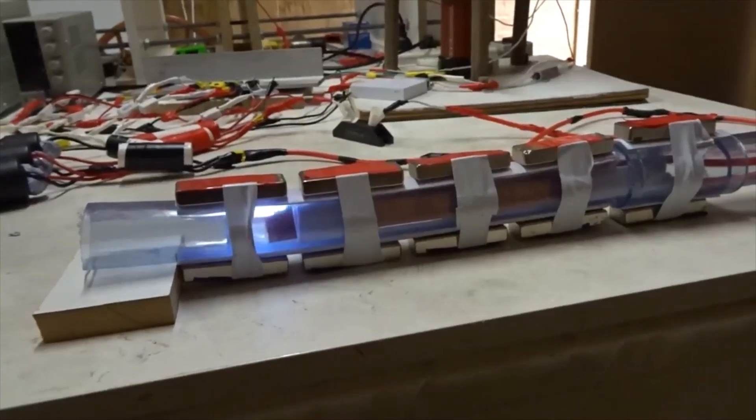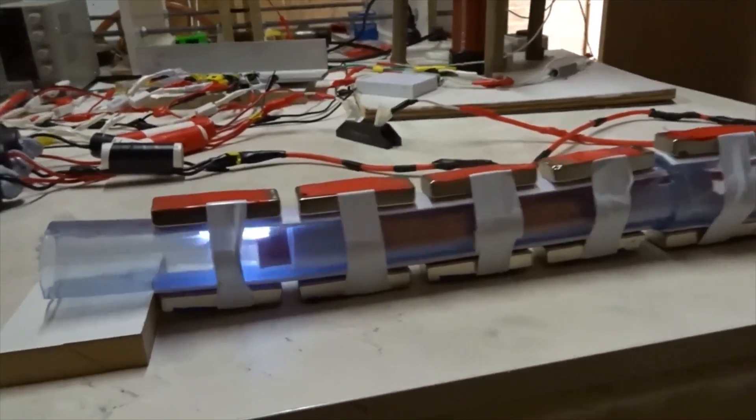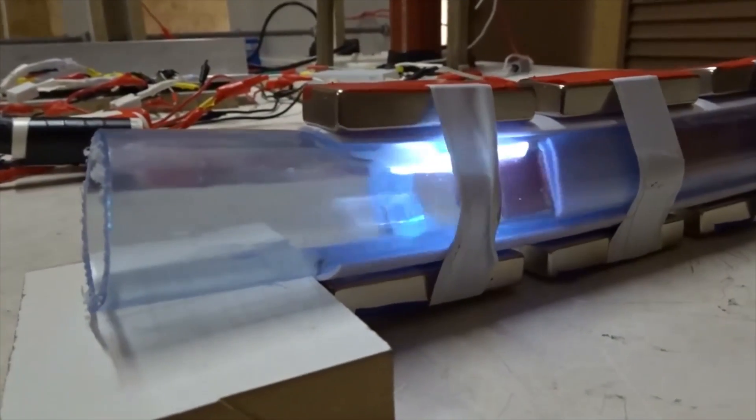When we increase the flow rate a little bit with these five magnets in a row covering all of the copper rails, then we essentially get a rocket flame installed. This is a blue color from argon.